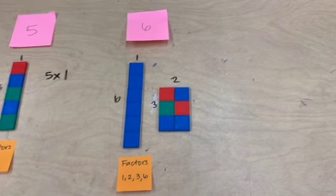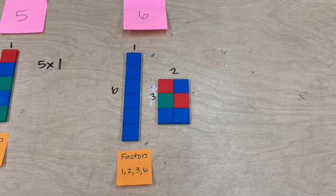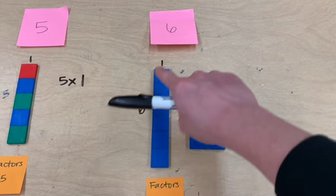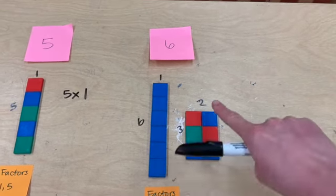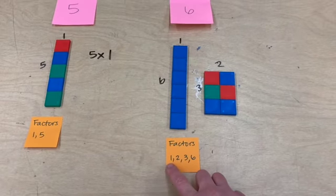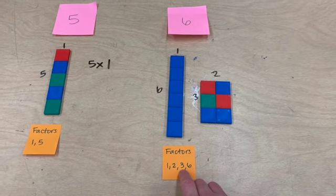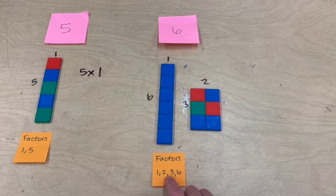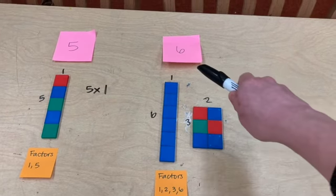Now let's look at the number 6. If I build out rectangles with 6 tiles, I can use the combination 6 times 1 or 3 times 2. So its factors are 1, 2, 3, and 6. Those are the numbers that we can multiply together to get to 6.